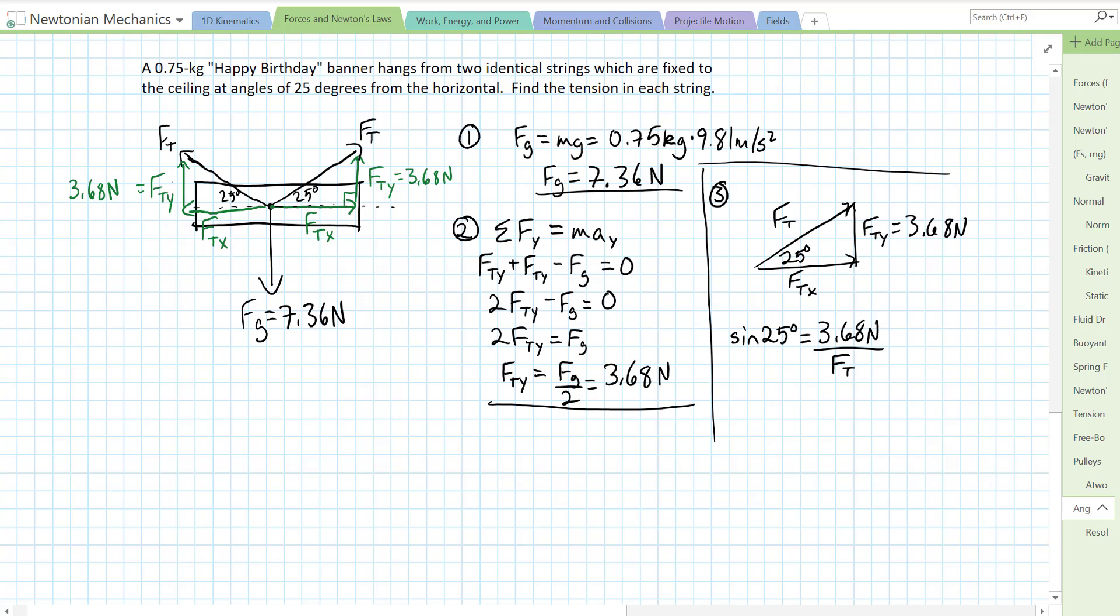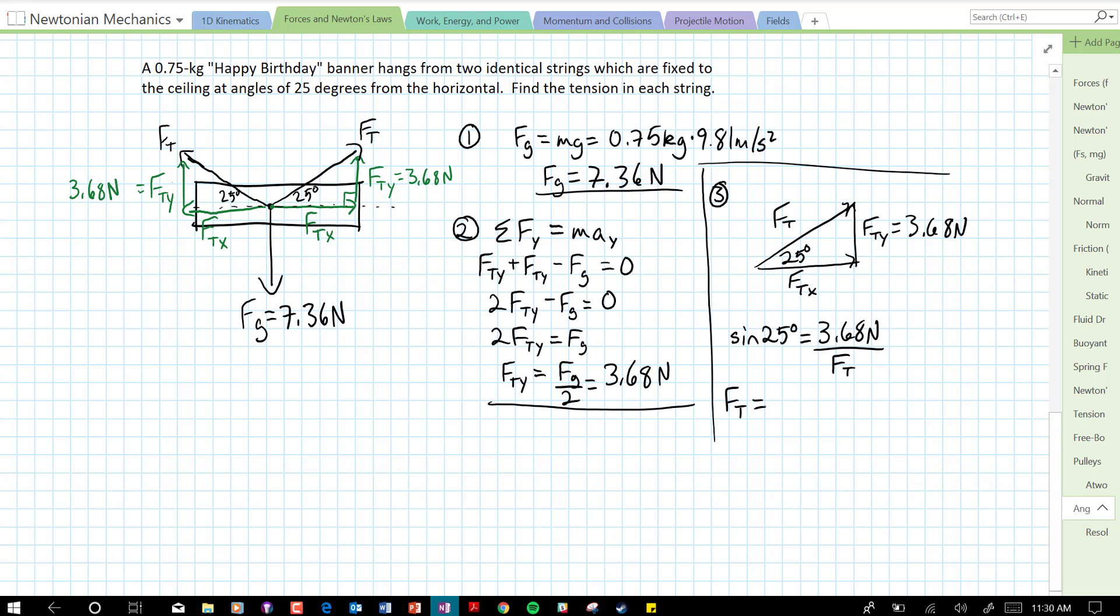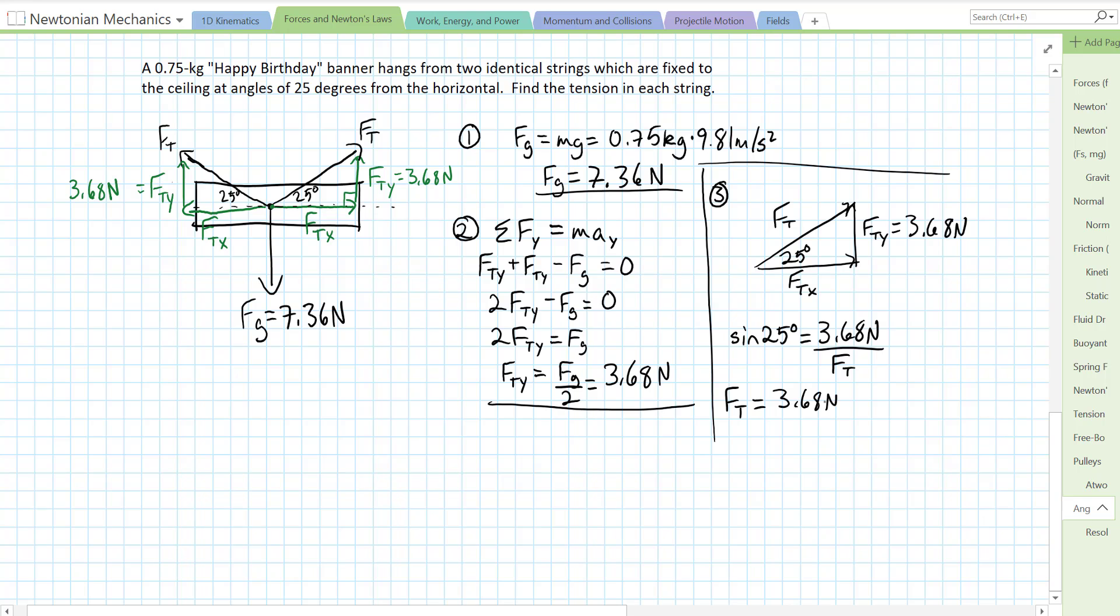If we solve for Ft, we get Ft equals 3.68 Newtons over sine of 25 degrees. We plug that into a calculator to get our tension: 3.68 divided by sine of 25 degrees. Make sure I'm in degree mode. I get the tension is 8.71, or 8.7 Newtons to the correct number of sig figs, two sig figs.